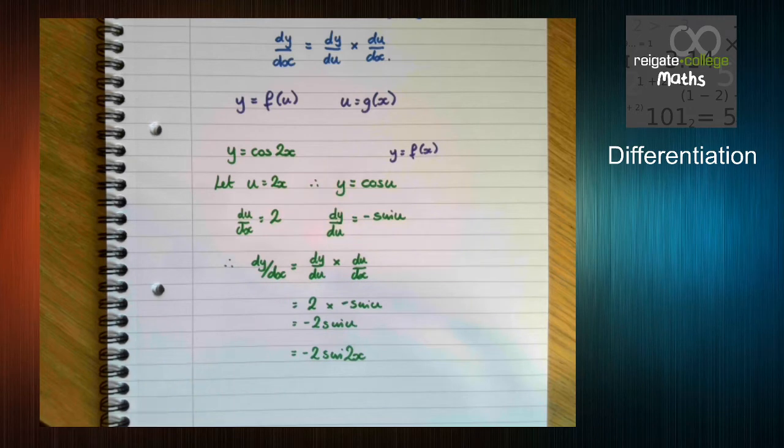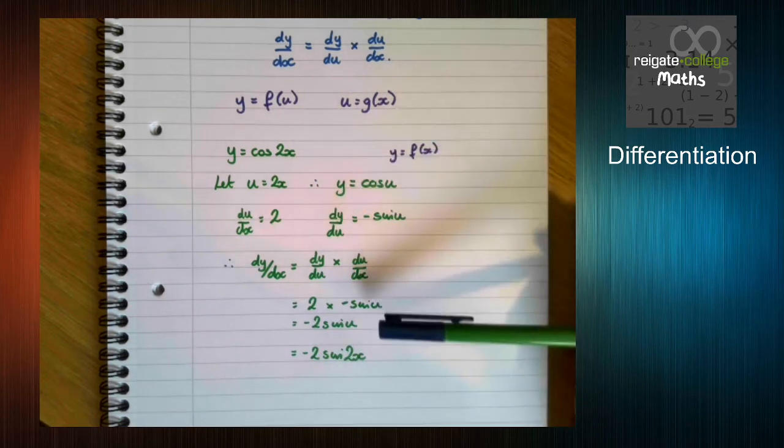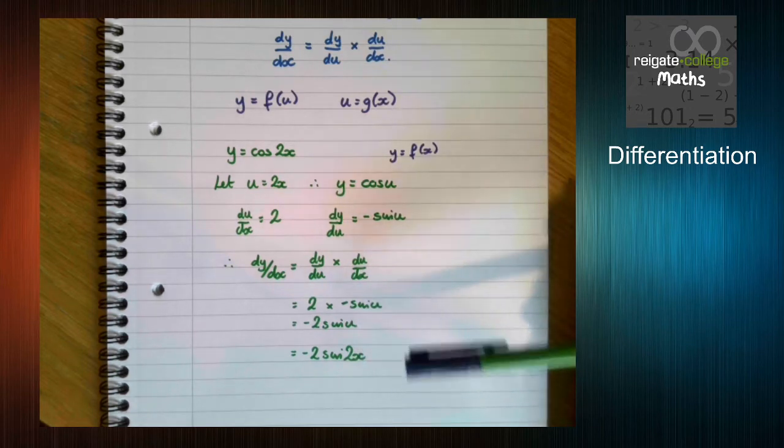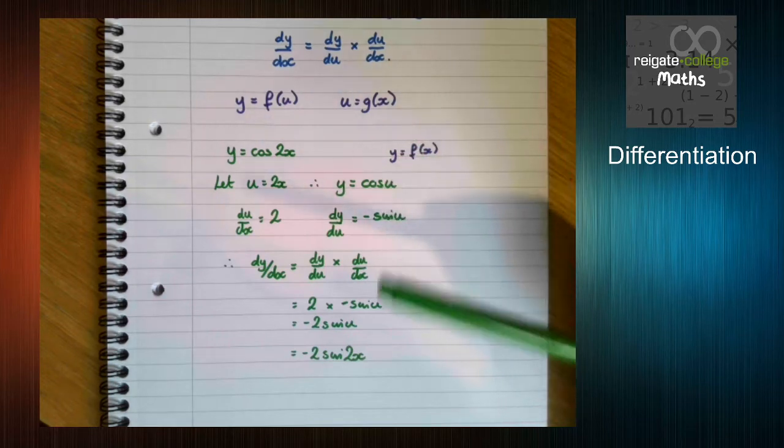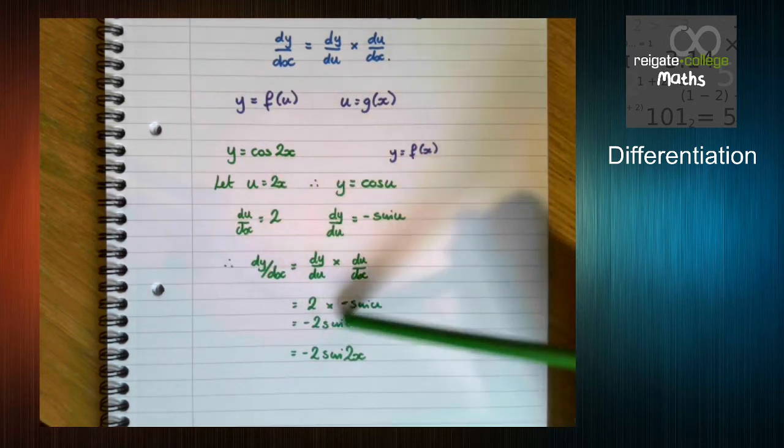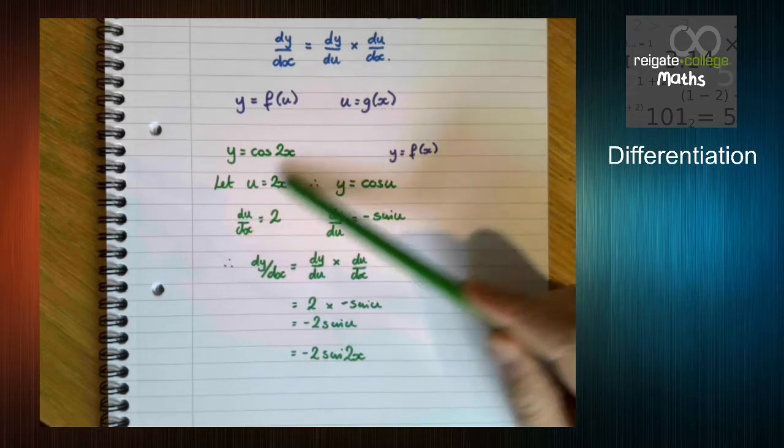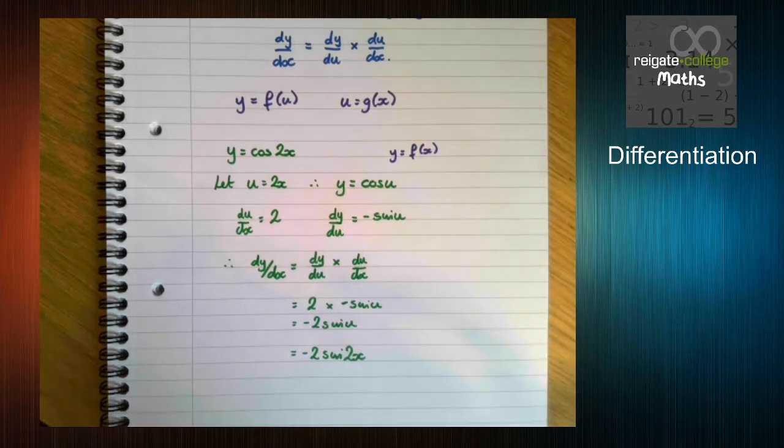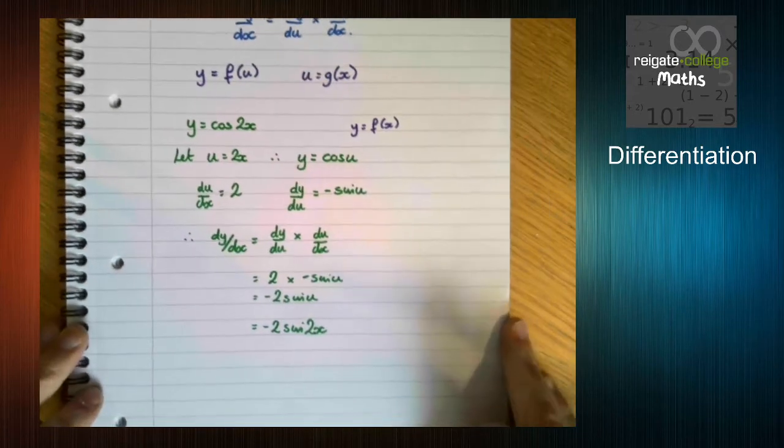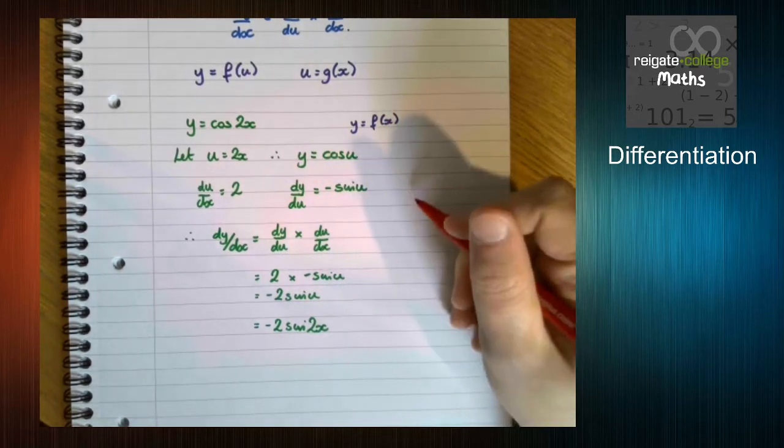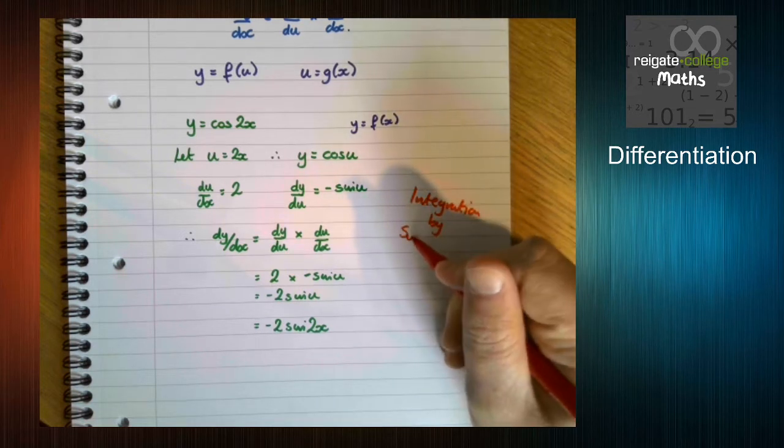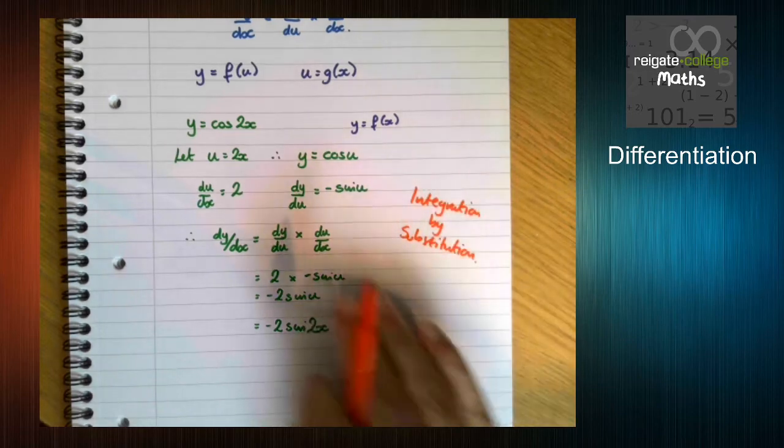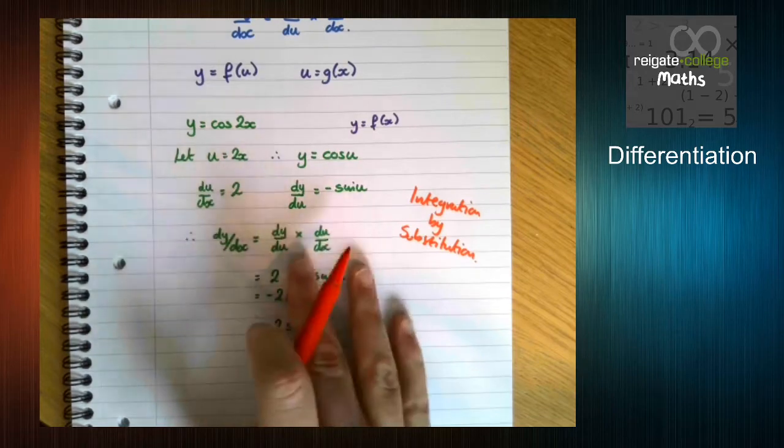So before we looked at how we can jump straight from here to here. And you can do that. And in fact with a lot of examples, with the majority of chain rule problems you can do that. But if you consistently get it wrong, I would strongly advise using this method to practice until you can spot the patterns. Also this method is very similar to something I'm going to do in another video called integration by substitution.